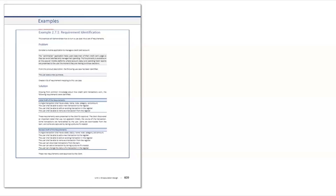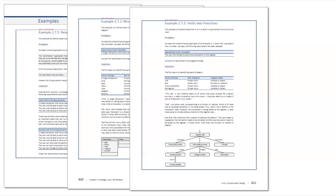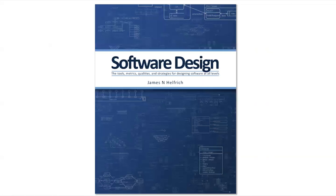This is examples 2.7.1, 2.7.2, 2.7.3, and 2.7.4 in the noun identification chapter of the software design textbook.